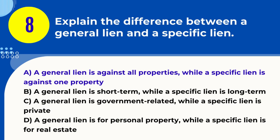Explanation. A general lien is a legal claim against all the properties of a debtor, for example, due to unpaid taxes, whereas a specific lien is against a particular property only, for example, a mortgage on a specific house.